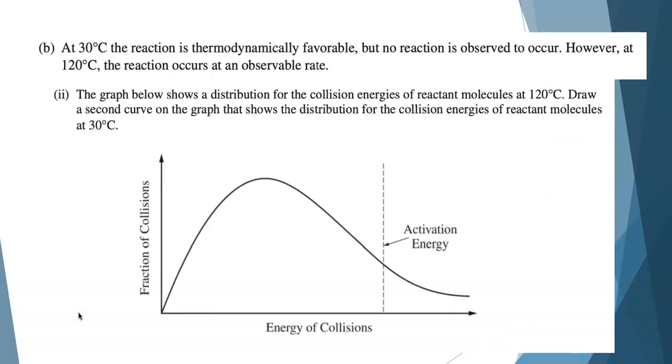I see a Maxwell-Boltzmann distribution. The graph shows a distribution for the collision energies of reactant molecules at 120 degrees. Draw a second curve showing the distribution for collision energies of reactant molecules at 30 degrees, a lower temperature. If the temperature is lower, the average speed will be lower. We have to show that, and we also have to show that fewer particles will meet the activation energy minimum.